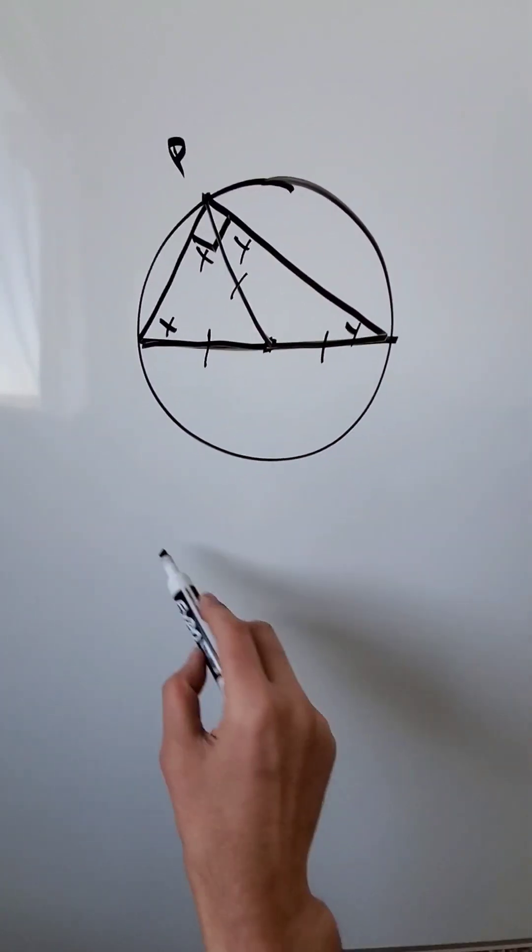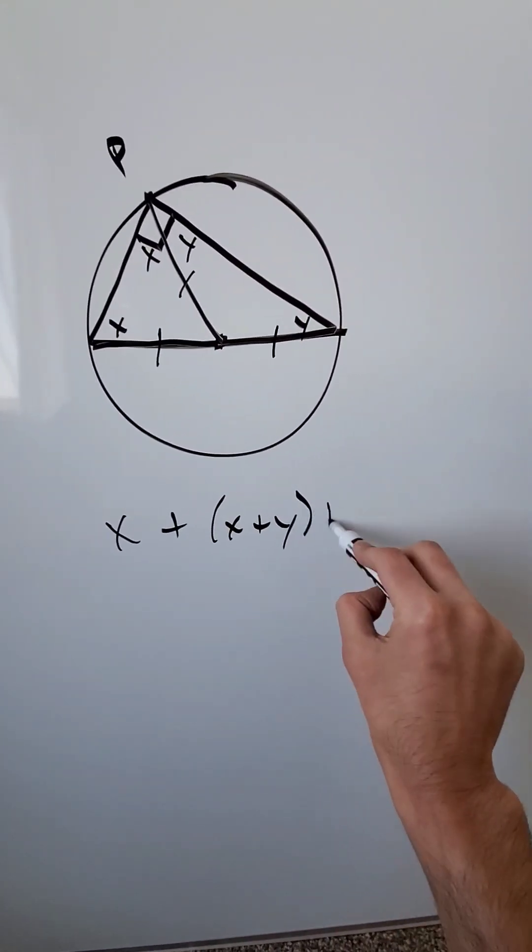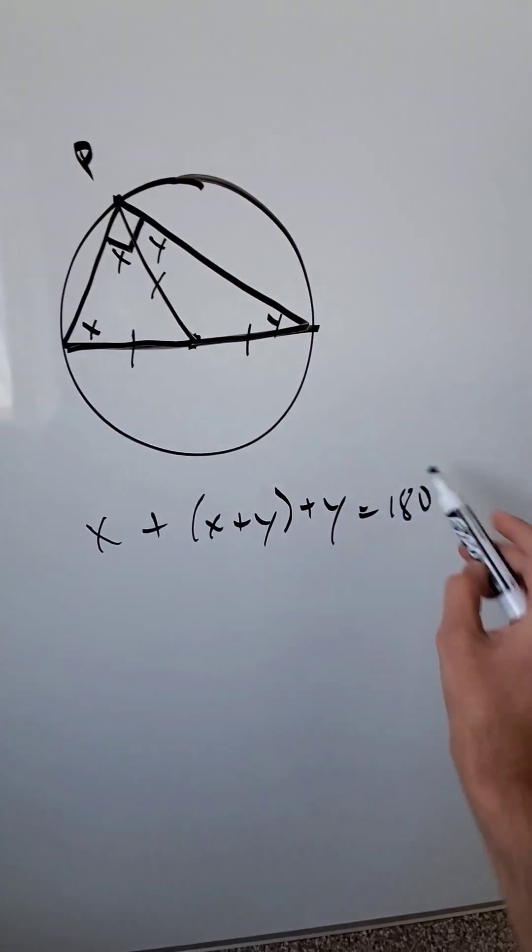Now I have a bunch of angles. X plus X plus Y plus Y. The sum of internal angles for a triangle is 180.